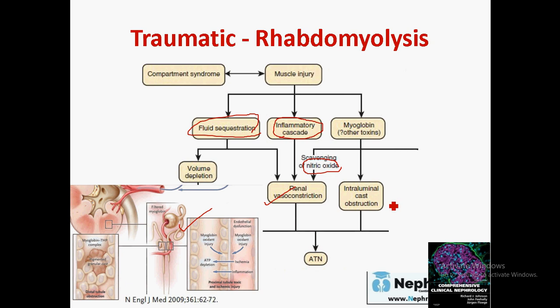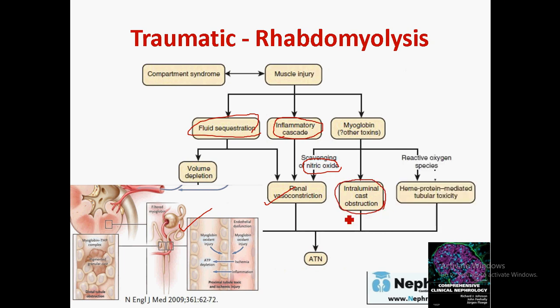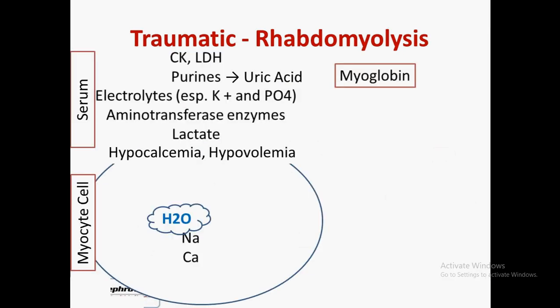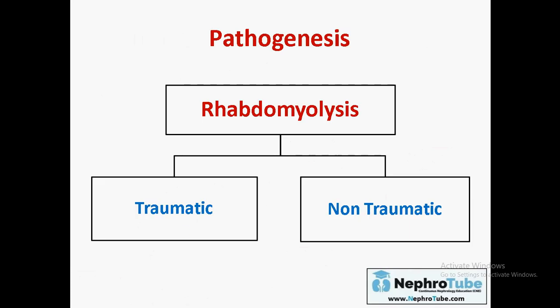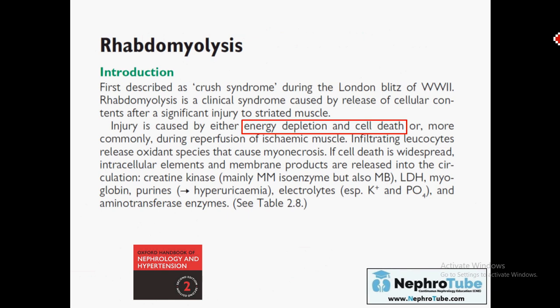Myoglobin affects nitric oxide levels, causing vasoconstriction. It can concentrate in urine and form casts, causing tubular obstruction. Myoglobin also increases reactive oxygen species, causing heme-protein-mediated tubular toxicity. The final result is acute tubular necrosis. Multiple factors cause ATN in rhabdomyolysis, but the most important are hypovolemia and inflammatory mediators. Myoglobin and hypovolemia are the two cornerstones for the pathogenesis of ATN.